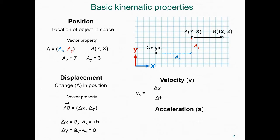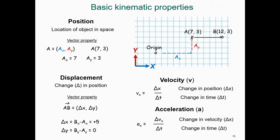Velocity concerns how quickly a change in position occurs. Velocity in the x-axis, represented as v subscript x, can be calculated as the change in position, delta x, divided by the change in time, delta t. Acceleration in the x-axis is represented symbolically as A with the subscript x for the x-axis, and concerns how quickly a change in velocity occurs.